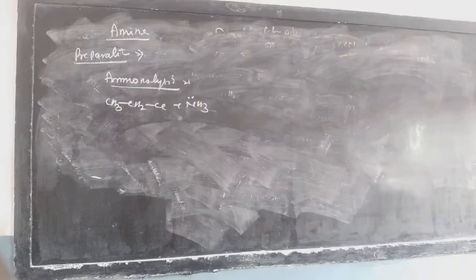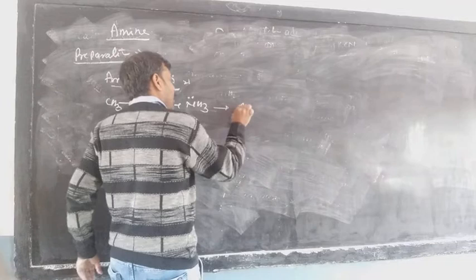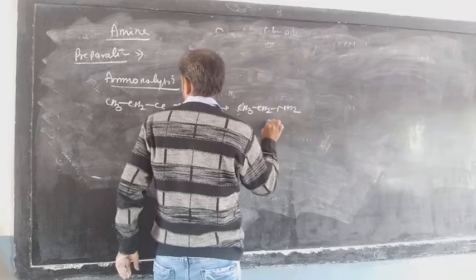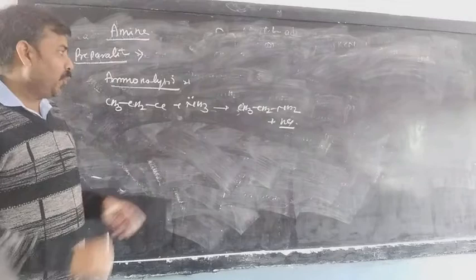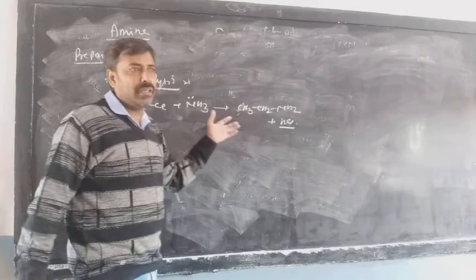The next reaction is ammonolysis. When ammonia is treated with a haloalkane, it forms amine — CH3-CH2-NH2 along with a halide. If we treat the haloalkane again with the product, it will form secondary amine, and a further treatment will form tertiary amine. This step is called alkylation, and the overall process is the ammonolysis of the haloalkane.